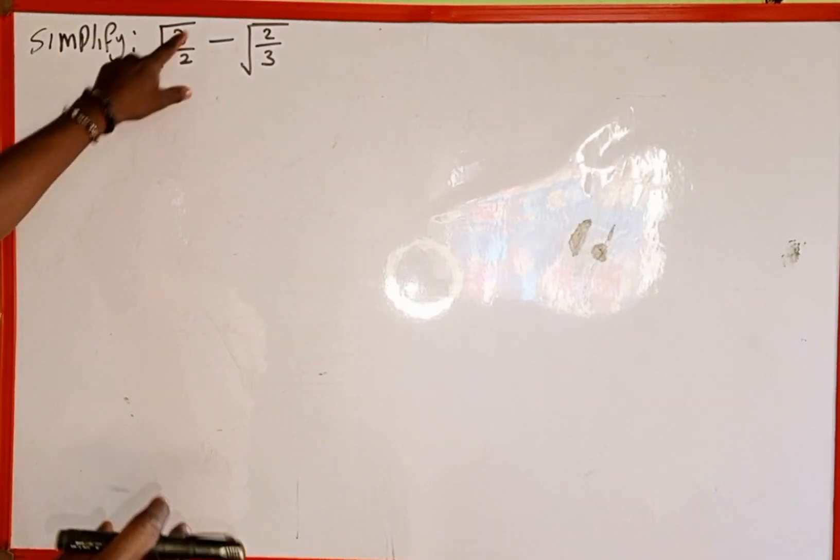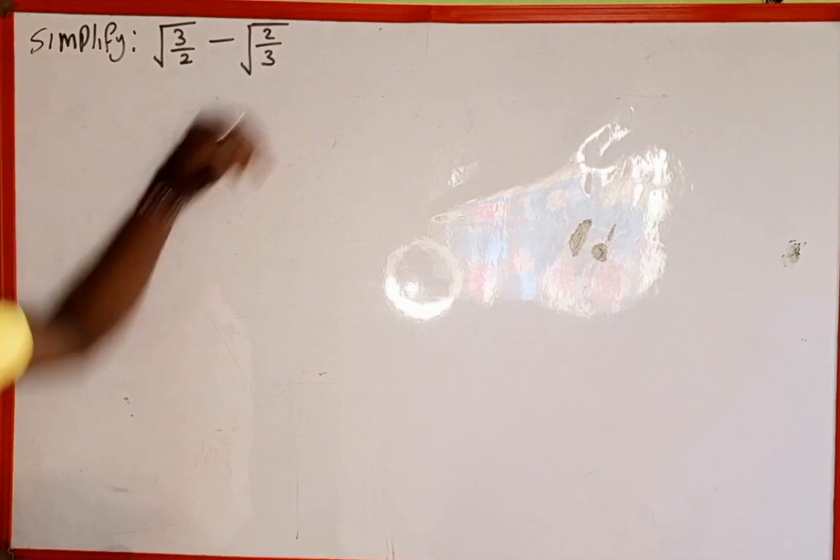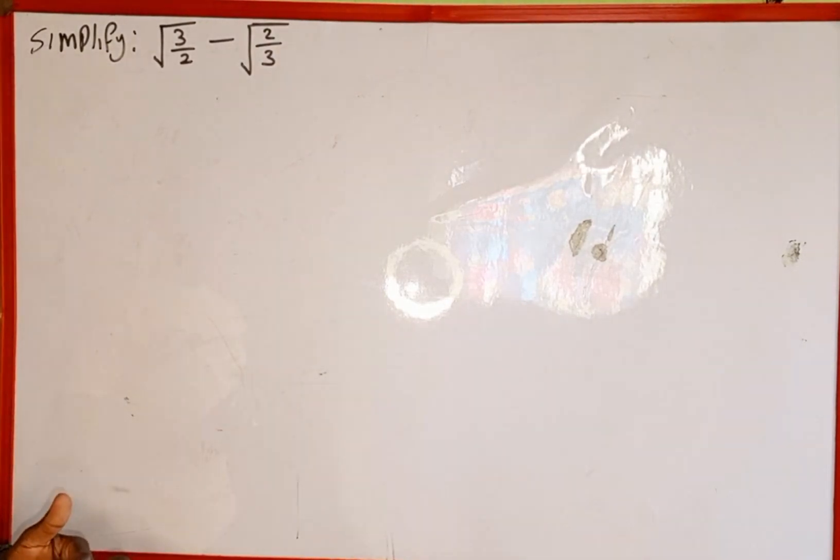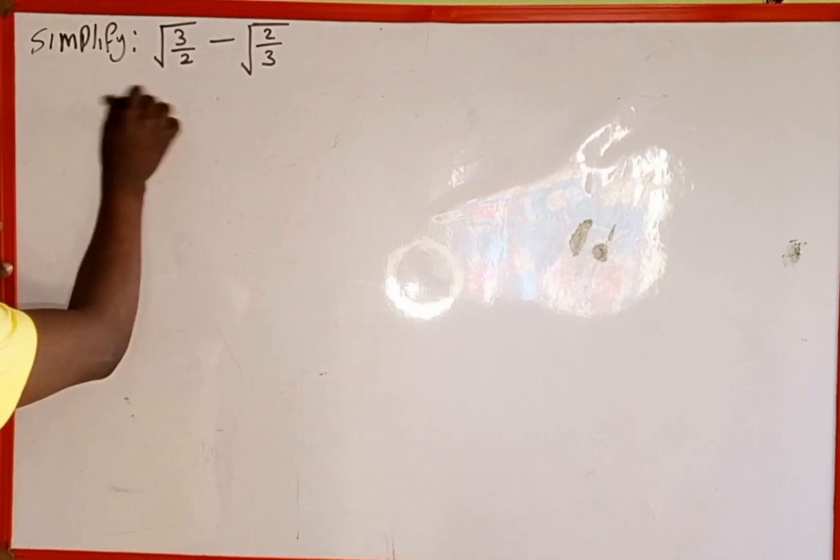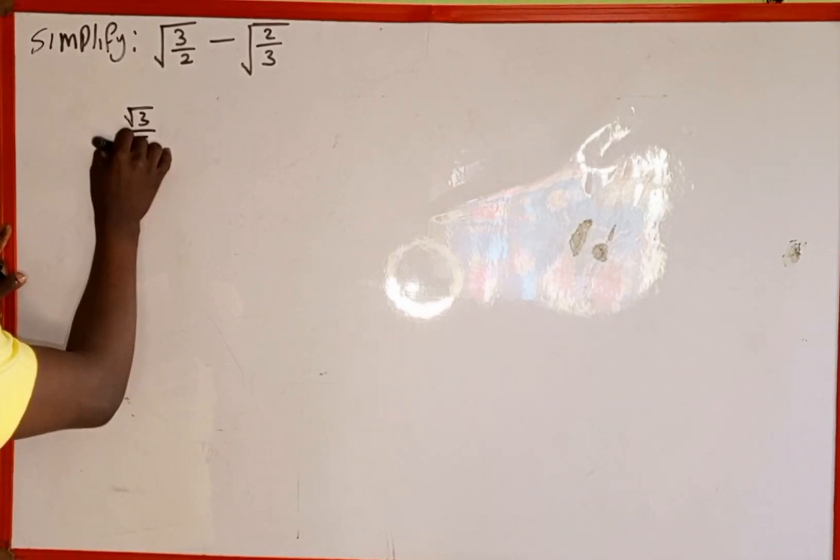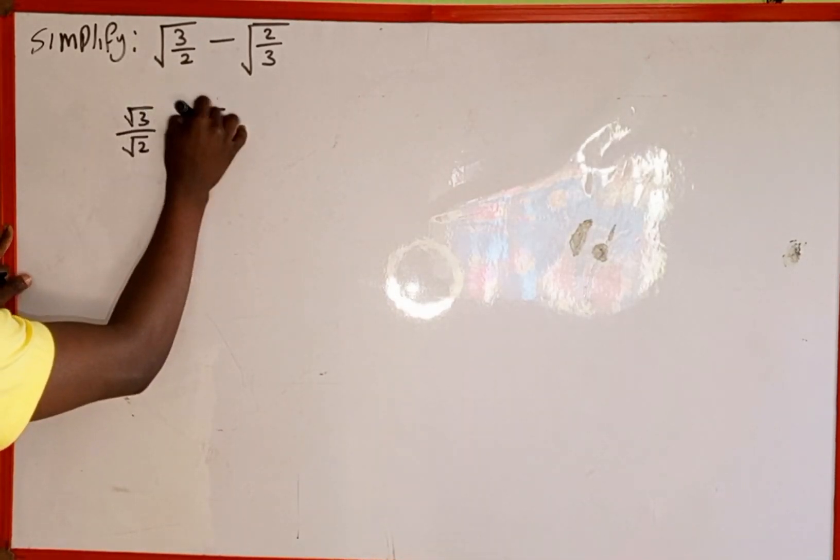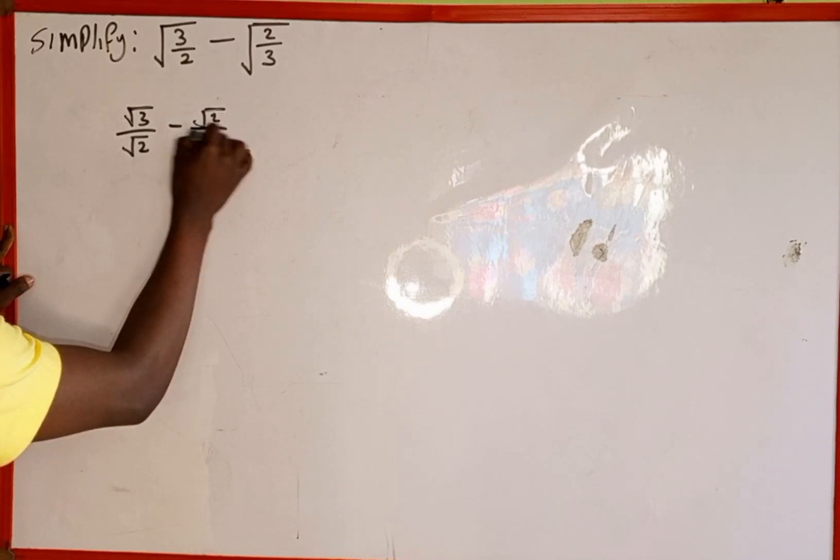The given expression is root of 3 over 2 minus root of 2 over 3. To simplify this, the first thing we are going to do, we can rewrite this as root of 3 divided by root of 2 minus root of 2 divided by root of 3.